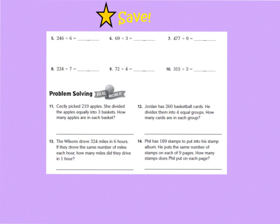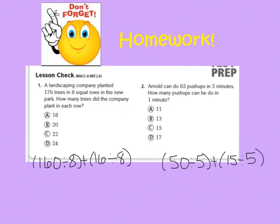All right, for 5 through 14, we are going to put a star and write the word save, because we are going to save these problems for class tomorrow, and we're going to work on them tomorrow in class. So go ahead and put a star and put save. All right, don't forget, we have to do our homework.